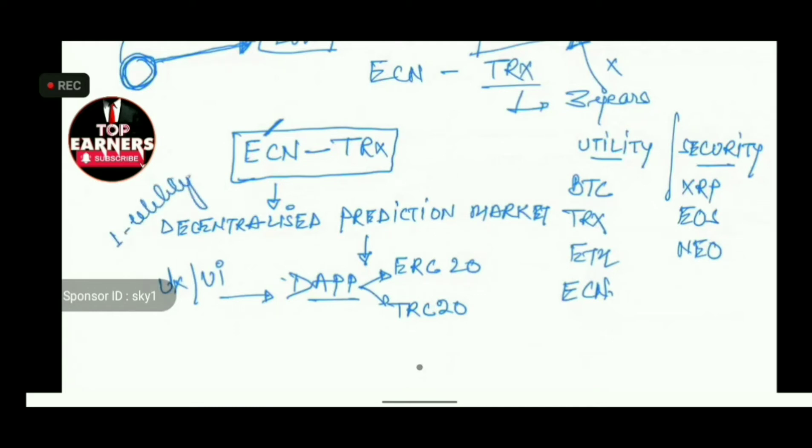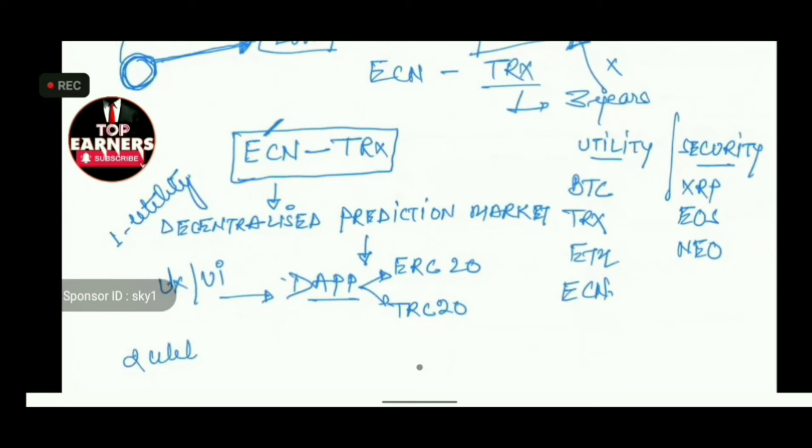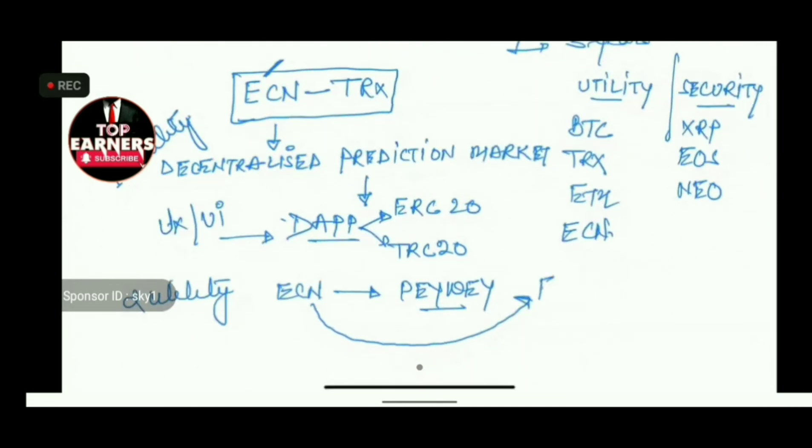Okay, what is the second utility? Your ECN is going to be on Payway, which means you got access of this coin with all the fiat currencies, backed with your crypto Mastercard.